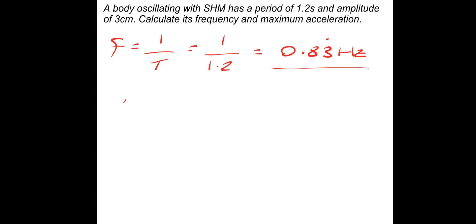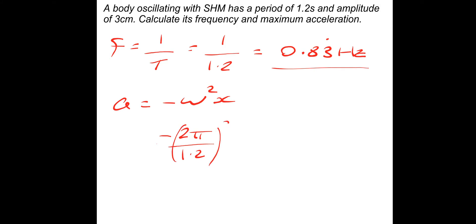Then to get the acceleration, we need to use a = −ω²x. We've got minus (2π over T) squared, so we can do 2π divided by the time period 1.2, squared. Make sure you square this value, and then multiply it by the amplitude of 3 cm as the displacement.